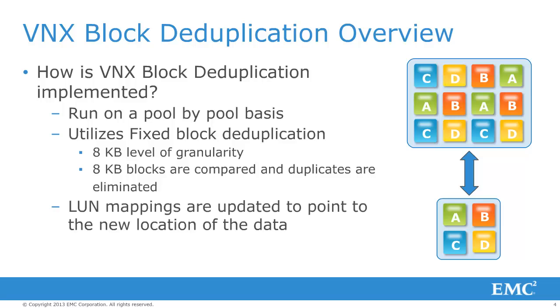Before duplicate data is removed, the LUN mappings for these blocks are updated to point to the data being retained on the system. When accessed, the I/O will be redirected to the shared block.